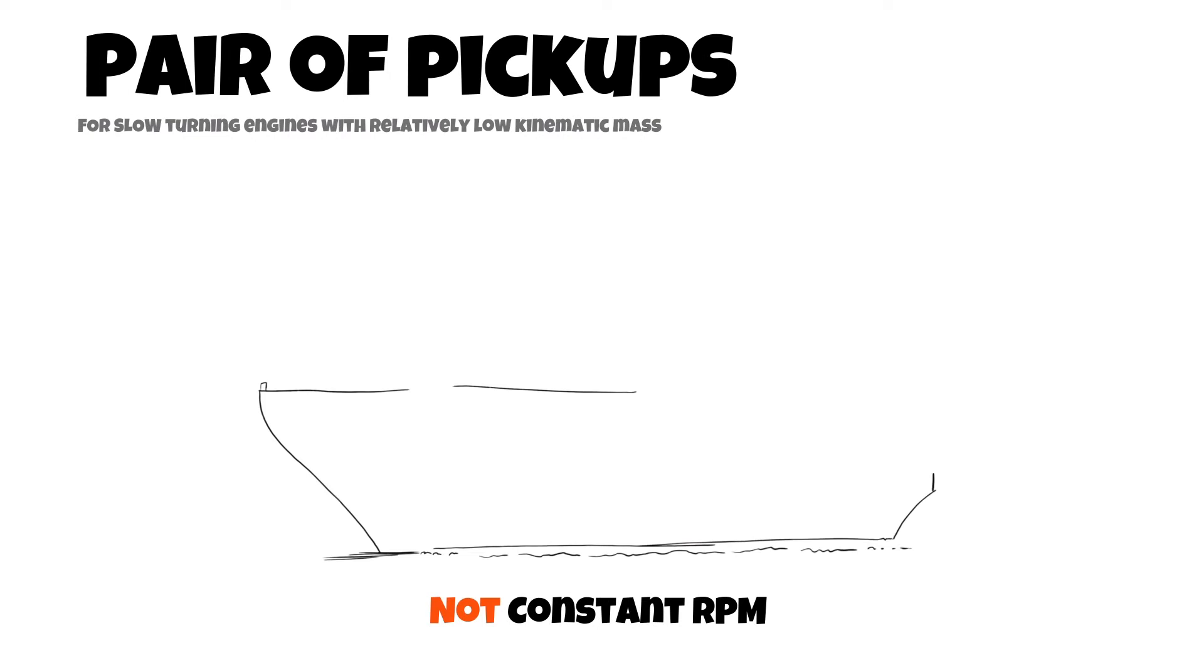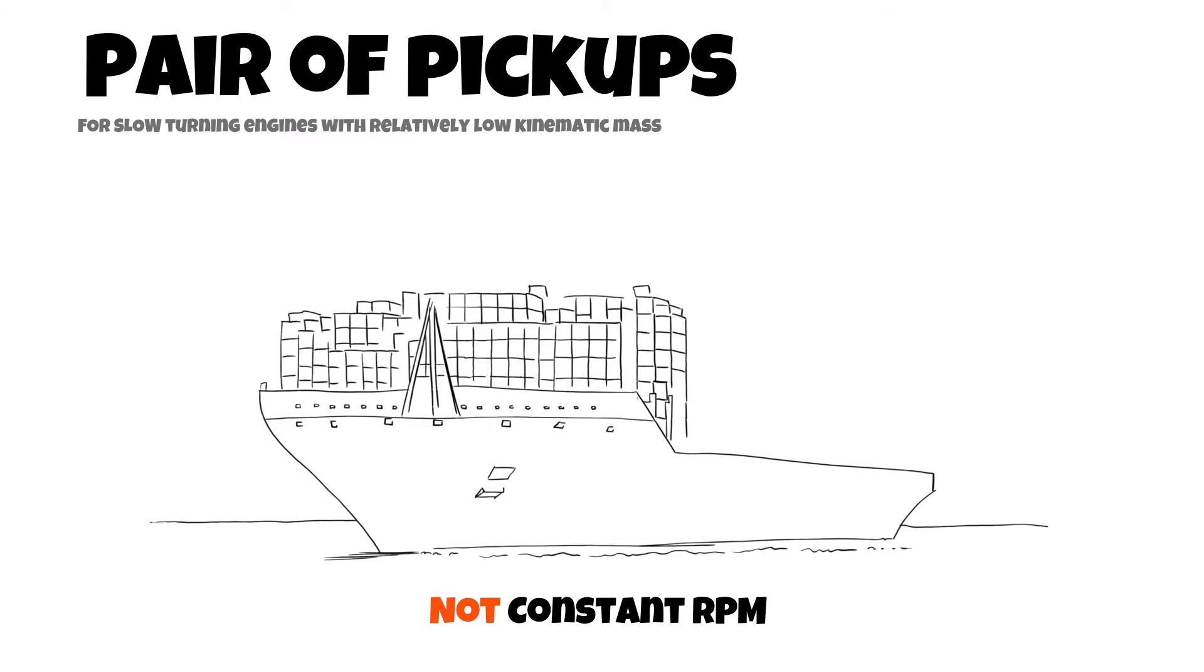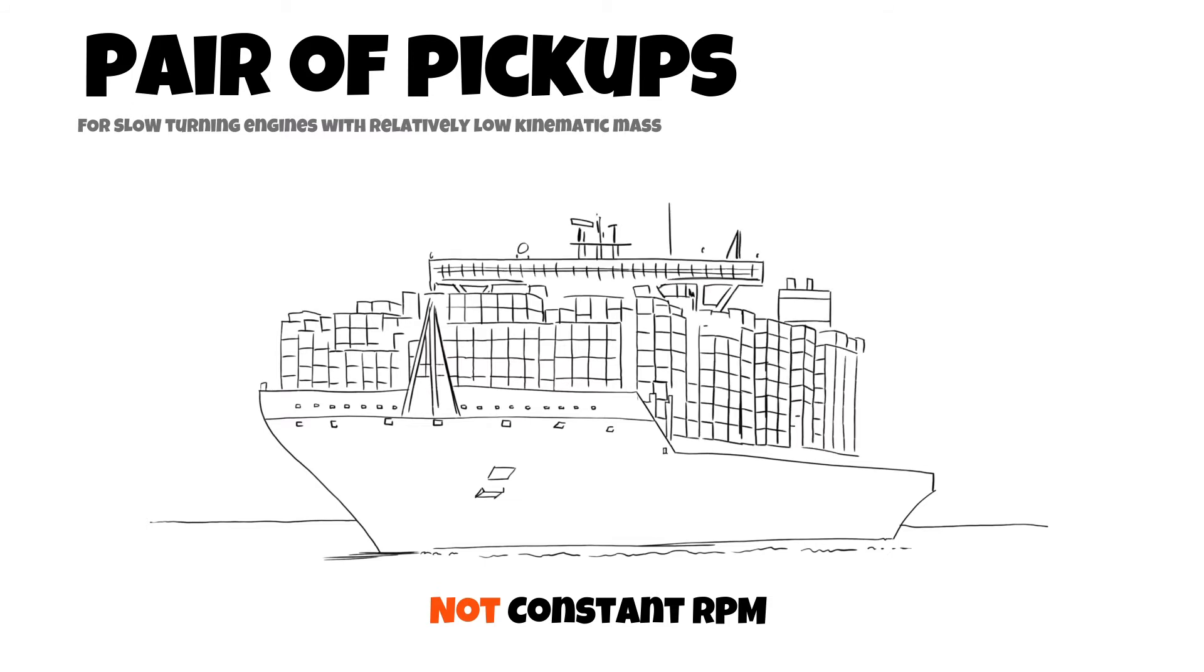Ships which have a two-stroke engine for the propulsion and three or more medium speed diesel engines to run the generators would need a pair of pickups permanently installed on the flywheel of the main engine and a single TDC sensor permanently installed on each auxiliary engine.